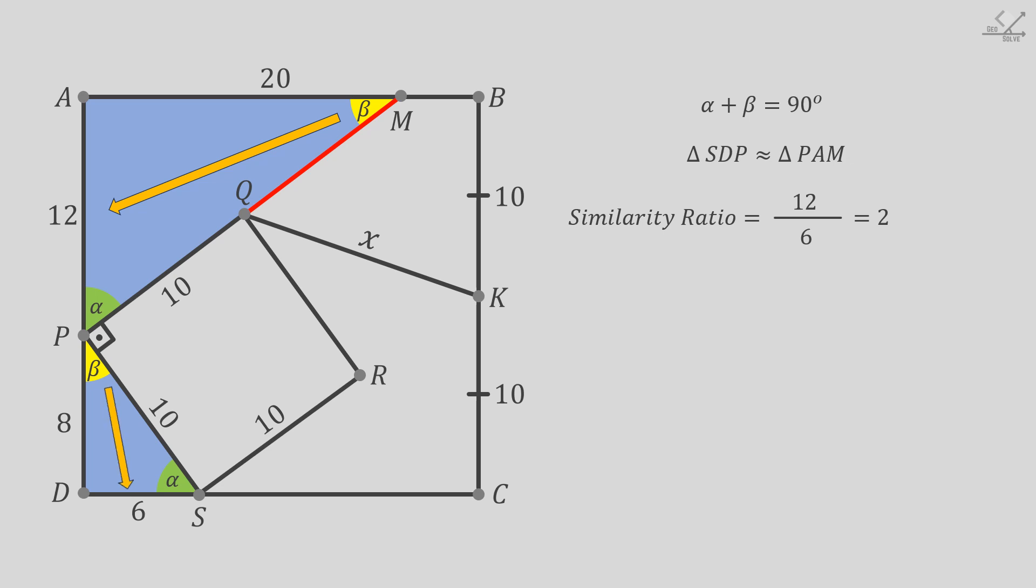The side opposing the alpha degree angle in the lower triangle is 8 units. Since the similarity ratio is 2, the side opposing the alpha degree angle in the upper triangle must be 16 units, so this remaining part must be 4 units. The side opposing the right angle in the lower triangle is 10 units, so the side opposing the right angle in the upper triangle must be 20 units, and so this part should be 10 units.